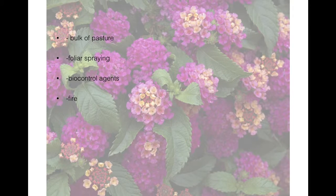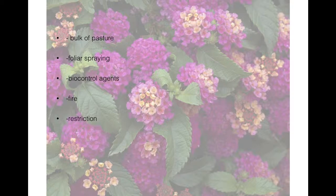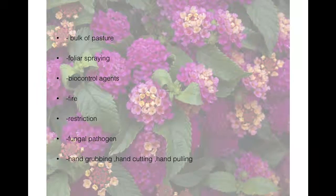Fire can be used to reduce the height and density of Lantana thickets. Restriction of sale and use of Lantana in gardens is also recommended. Fungal pathogens can be used to attack the widespread pink-flowering variety of Lantana. Lastly, hand-grubbing, hand-cutting, and hand-pulling can minimize soil disturbance and damage to desirable vegetation.